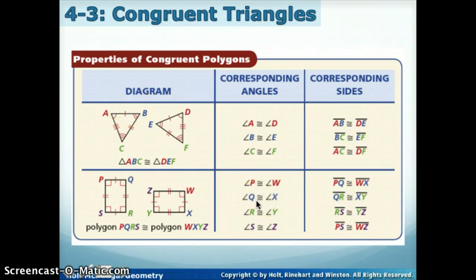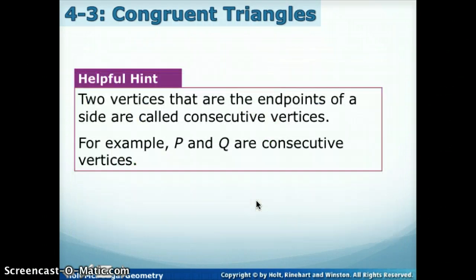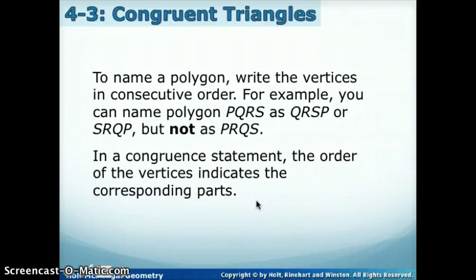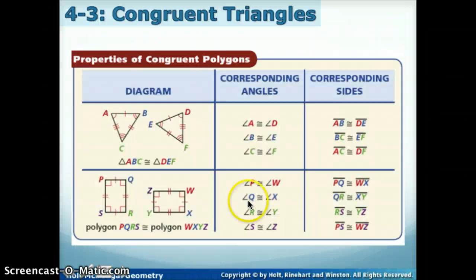And when we name our figures, we name the vertices in consecutive order. So polygon PQRS could also be RSPQ, but it could not be RPQS because that doesn't go consecutive. R to P does not go consecutive. You'd have to have RSPQ or RQPS.